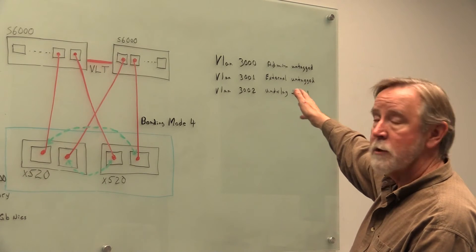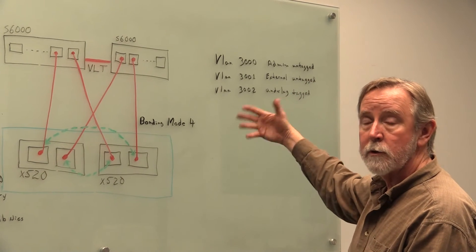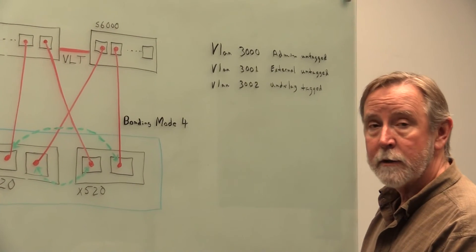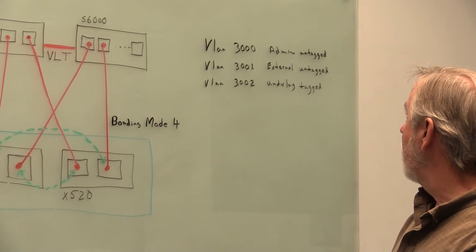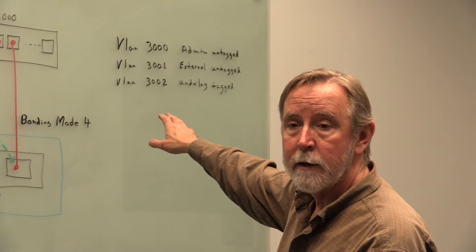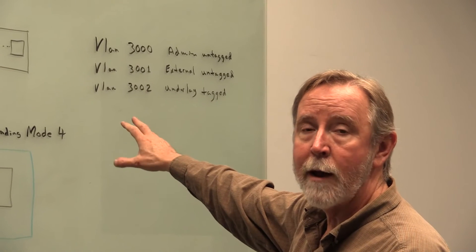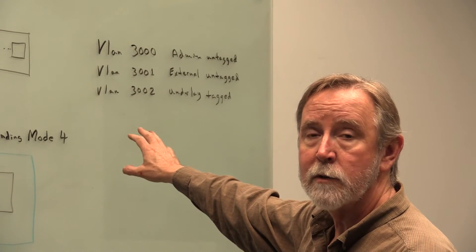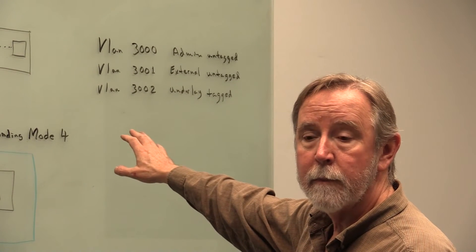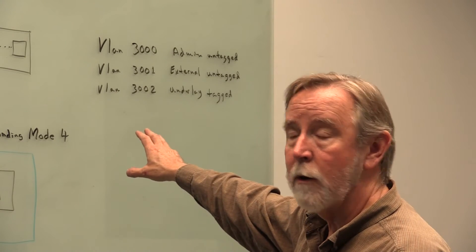We just numbered them 3000, which we use as our admin. It's an untagged VLAN. And the admin network, by the way, is used by the Triton services as well as operator type traffic over that one.